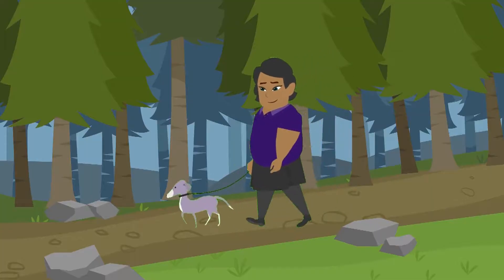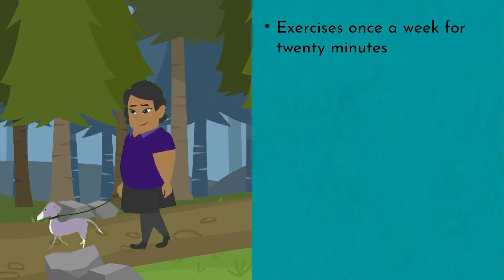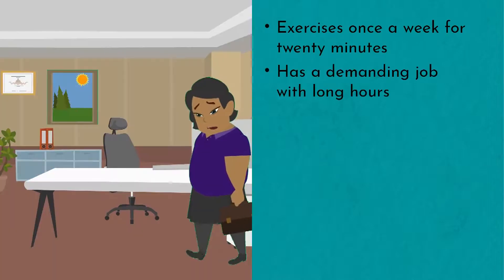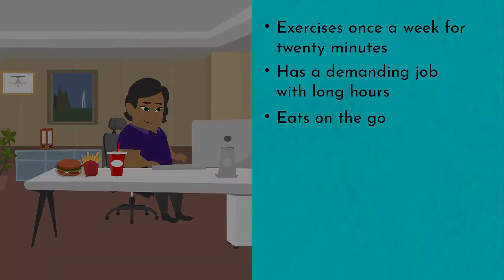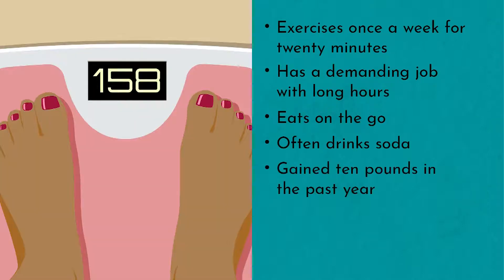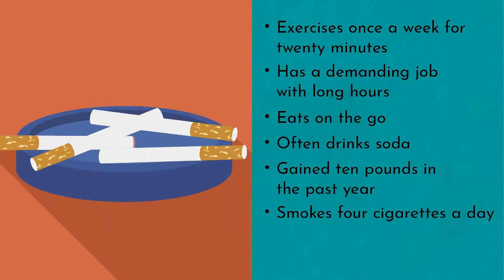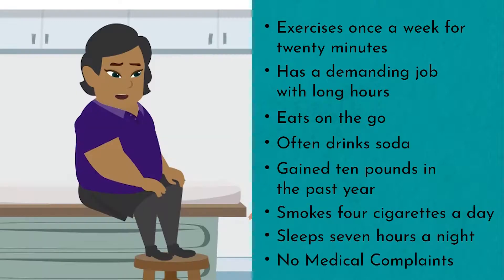Based on Julia's history, we know she exercises once a week by walking briskly for 20 minutes. She has a demanding job with long hours, eats on the go and late in the evening. She often drinks soda to keep her energized at work. She reports gaining 10 pounds in the past year. She smokes four cigarettes a day, sleeps seven hours a night, has no medical complaints, and is upset that her blood test indicates that she has pre-diabetes.